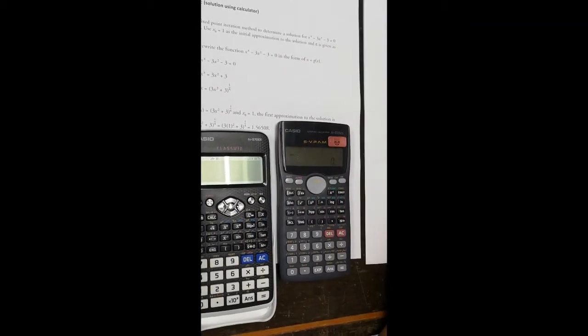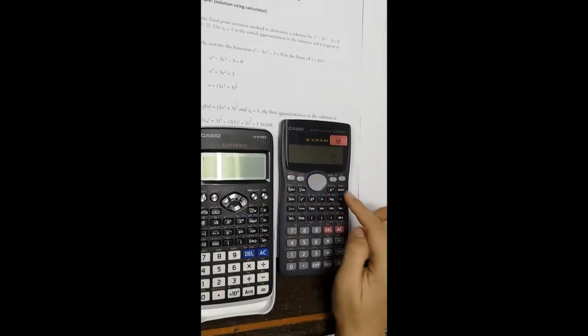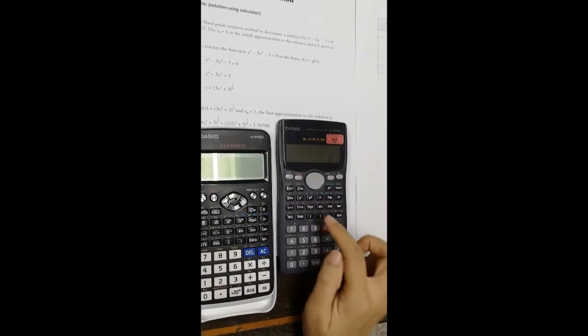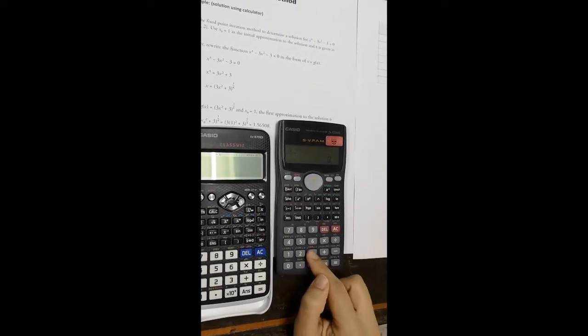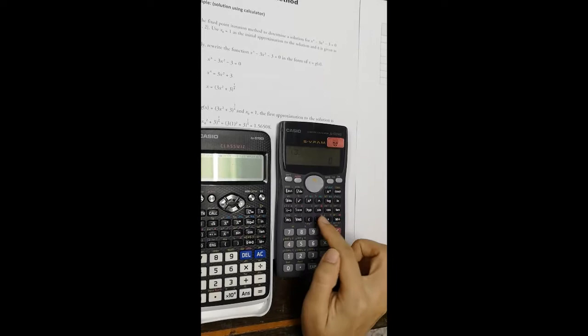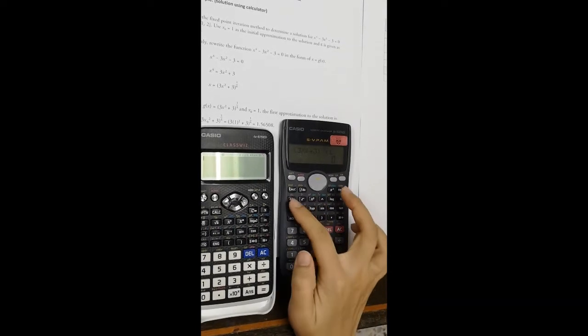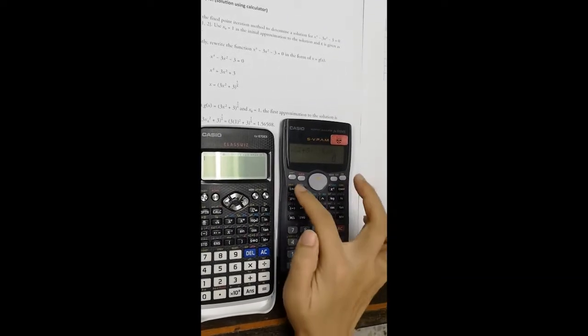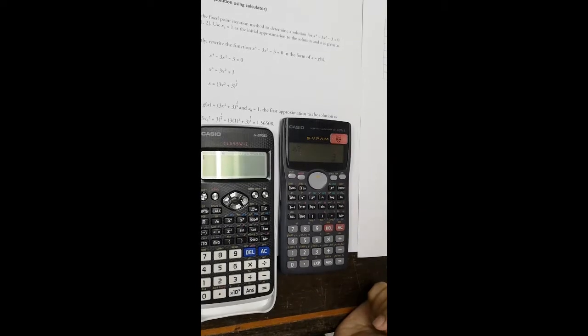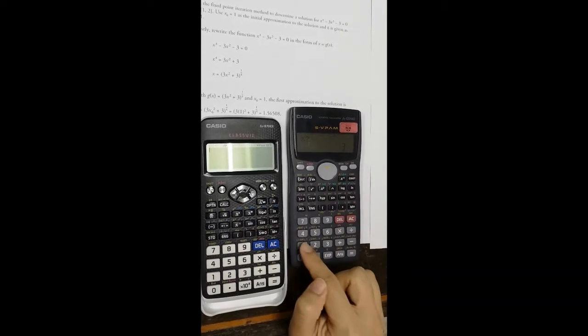From this calculator, we put in the g(x): 3x^2 + 3 to the power of 1/4. So the initial value is 1, so now you key in 1 into this calculator and I will obtain the x1.